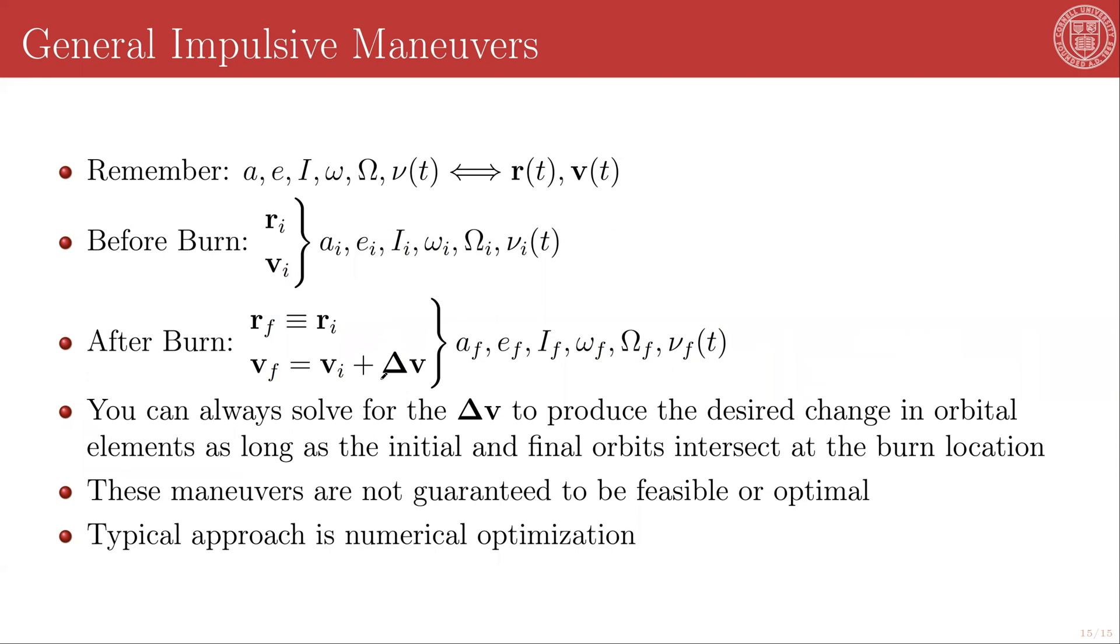So if you are on an orbit before the burn that has a specific set of Keplerian elements, after the burn, you can be on an orbit that has any set of Keplerian elements so long as your orbital radius vector on the new orbit is exactly the same as your orbital radius vector on your previous orbit.